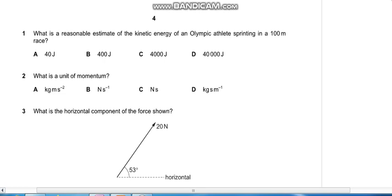Hello, let's solve QP 13 May June 2021. Question number one: What is a reasonable estimate of the kinetic energy of an Olympic athlete sprinting in a hundred meter race? Calculating the estimate of kinetic energy, half mv squared. Average mass of human body is 70 kg and the average speed of an athlete is almost 10 meters per second, so that becomes 3500, which is almost C.